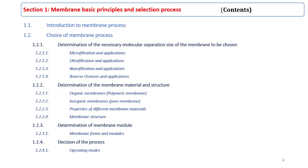Let's have a look at the contents. Section 1 is divided into two parts: introduction to membrane processes and the membrane selection process. In this section, you can learn how to select an appropriate membrane system according to the molecular separation size, membrane materials, membrane modules, and operating mode.